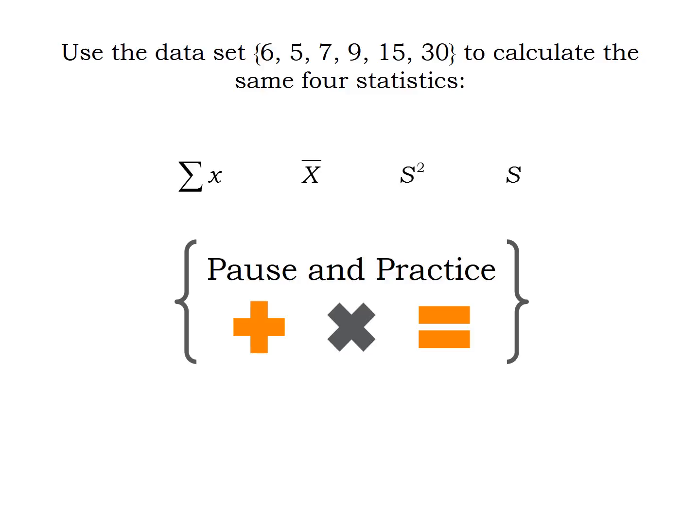Now it's your turn. I want you to take this sample with the 6, 5, 7, 9, 15, and 30 and calculate those same four sample statistics that we did a minute ago. So anytime you see this pause and practice, I want you to pause the video, do the example, and then restart the video and check your work. I'm going to give you a second to pause this video and calculate these four statistics. When you're done, restart it.